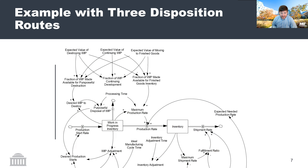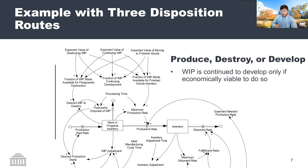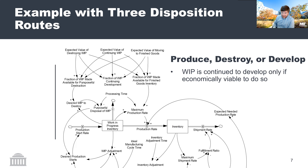This allows us to replace the connection from production start rate to production rate with this model, which has in this example three different disposition routes: produce and move to finished goods, destroy and remove from your work in progress inventory entirely, and develop — meaning leave it in that work in progress state for another unit of time. It's important to note that the fraction of work in progress continuing development is not directly tied into the rest of this model, and is instead implied via the economically viable choices of either moving it through the production process or removing it entirely through some sort of purposeful destruction.